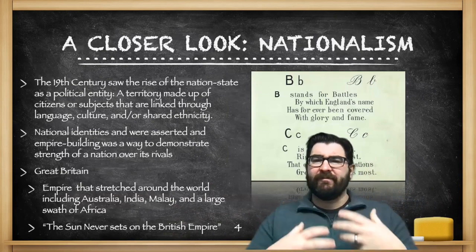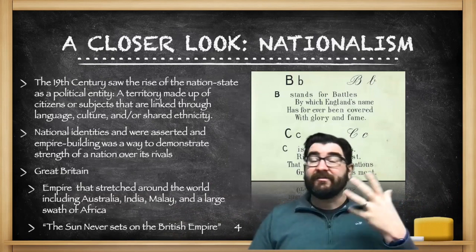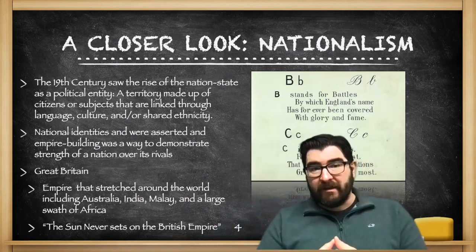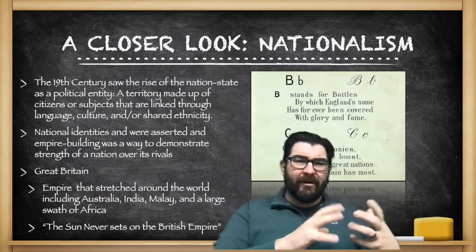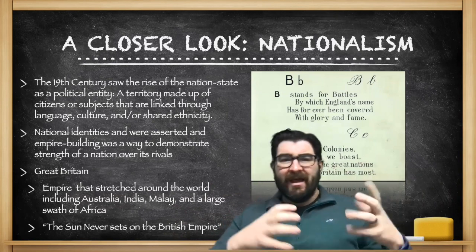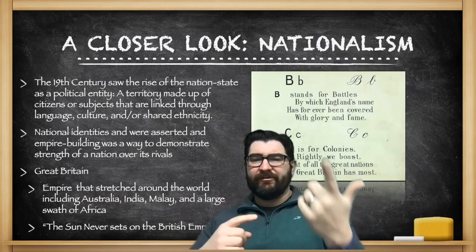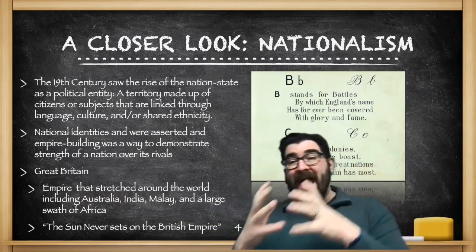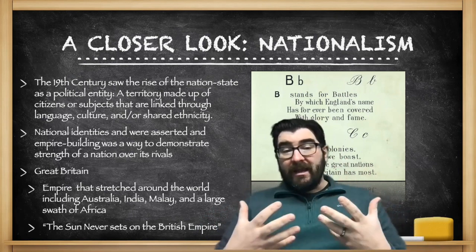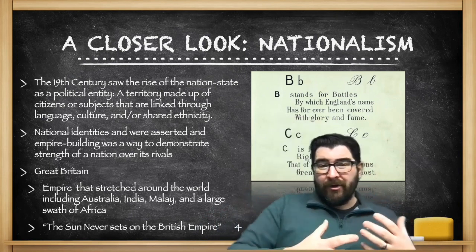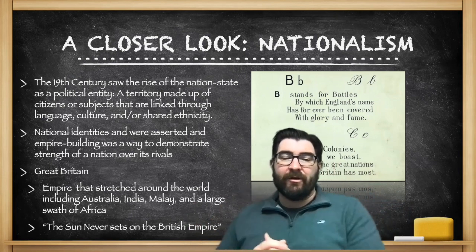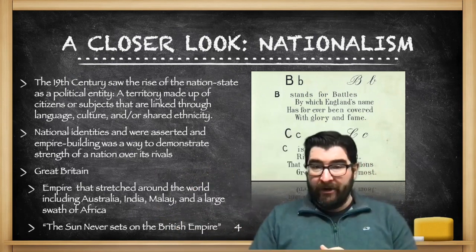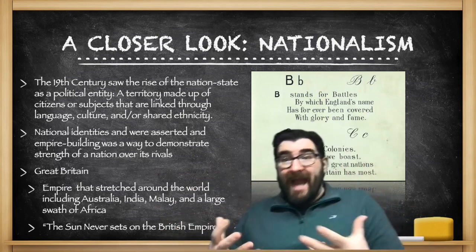Now let's look at some of the other rationales, starting with nationalism. The 19th century sees the rise of the nation-state as a political entity — a territory made up of citizens or subjects linked through shared language, culture, or ethnicity. National identities asserted in Europe were used to demonstrate the strength of a nation over its rivals through empire building. If you build the biggest empire, you feel more nationalist pride.